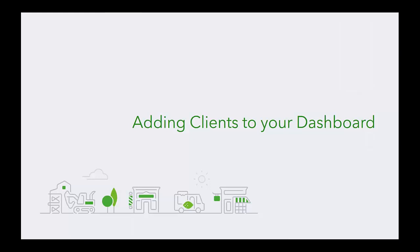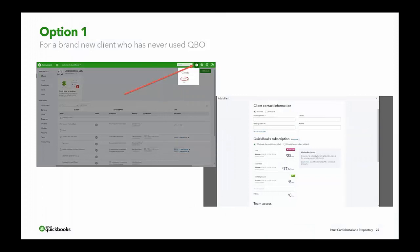Next, how to add clients to your dashboard. There are two different ways. The first is for a brand new client who has never used QuickBooks Online — you go to the plus sign in the upper right-hand corner next to the gear icon and click Create Client. On the right-hand side it walks you through creating a brand new QBO or QuickBooks Self-Employed subscription. For example, a client with QuickBooks Desktop you're moving to QBO: you create the subscription, then import their Desktop data into the online version.